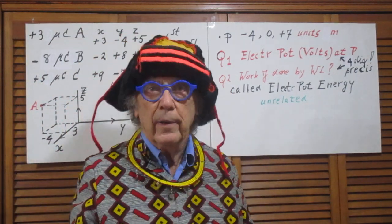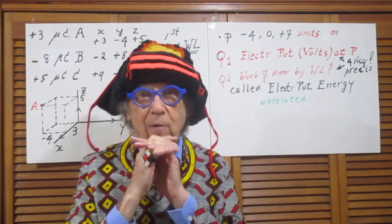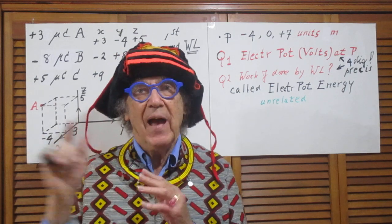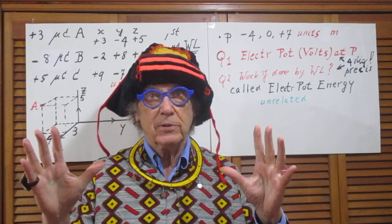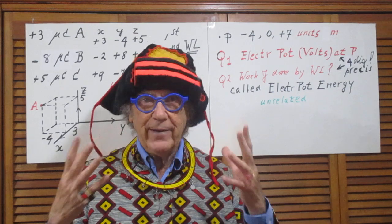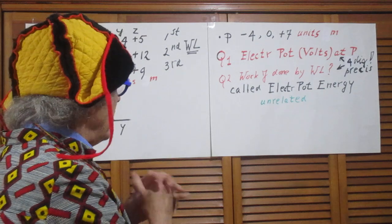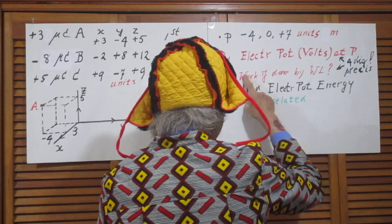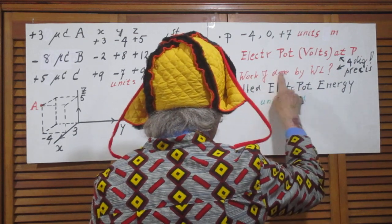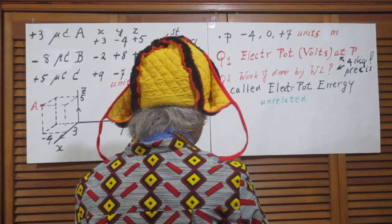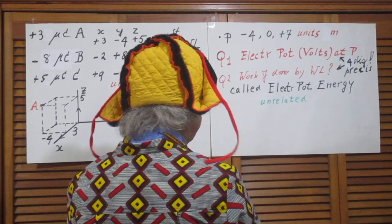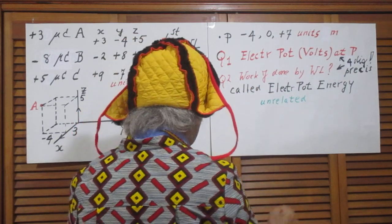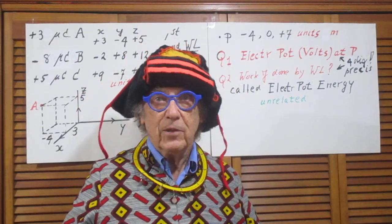Question number two is a very different question: what is the work that I, Walter Lewin, had done to bring A where it is, then B where it is, and then C where it is? That work is in joules — how much work have I done in joules? As I said earlier, electric potential and electric potential energy — this is the electric potential energy, this is the work that I have done — are unrelated. They differ as much as apples from coconuts. If I choose another point P, the answer to Q1 will change, but the answer to Q2 will not change. That shows you how unrelated they are.